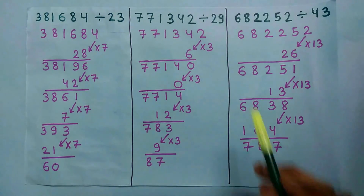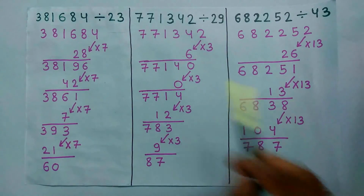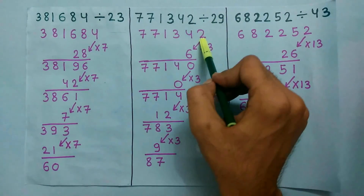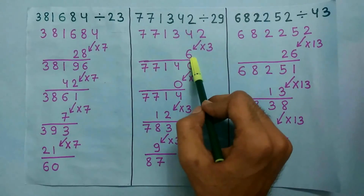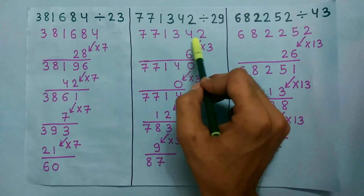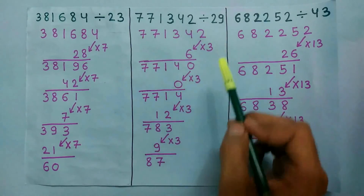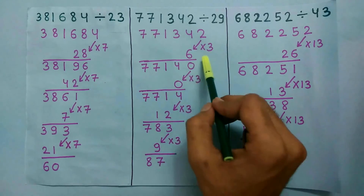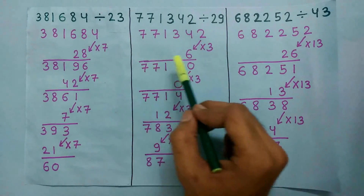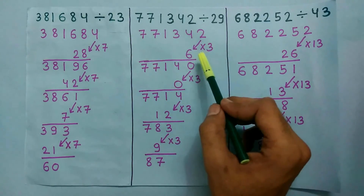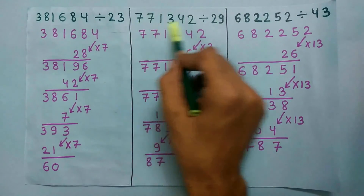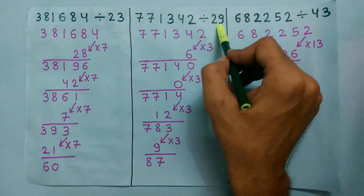Now we take an example for 29. To check if this number is divisible by 29 or not, multiply the last digit by 3 and we get 6. Now add this 6 to the remaining number and we get this number. This number is again large, so we repeat this process until we get a small number. In this case the small number is 87, and 87 is divisible by 29, so this number is also divisible by 29.